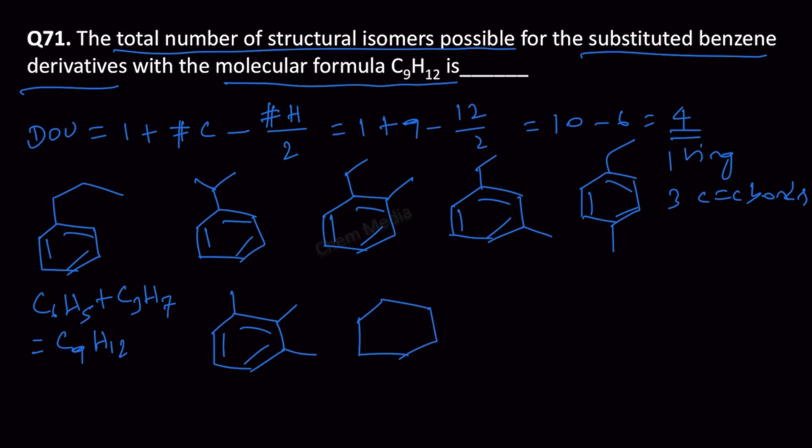Let us shift the position of 1 methyl group. Keep 2 of them as such. So this is another isomer. We can also write another isomer that is 1, 3, 5.